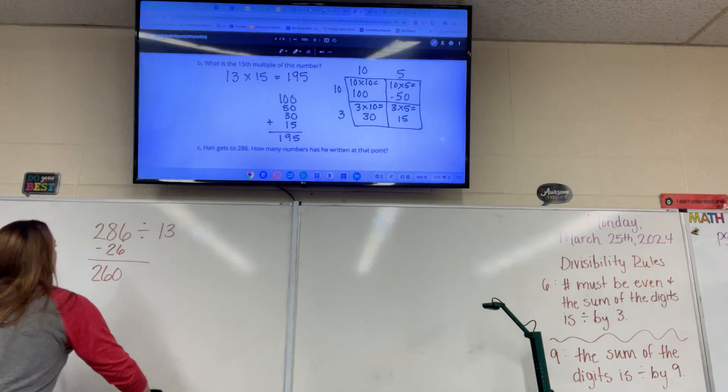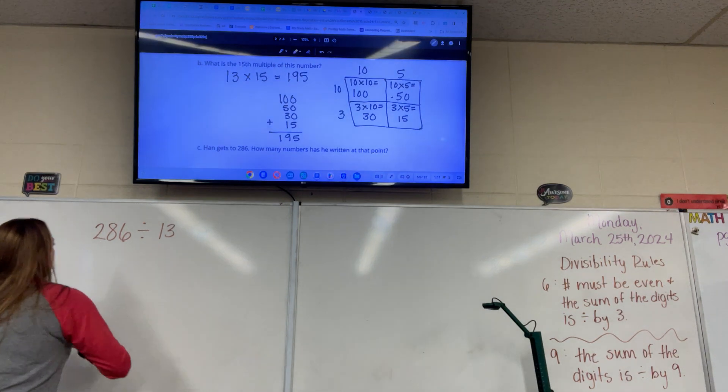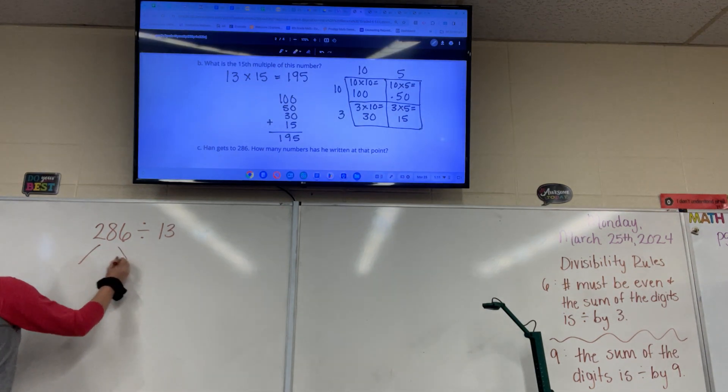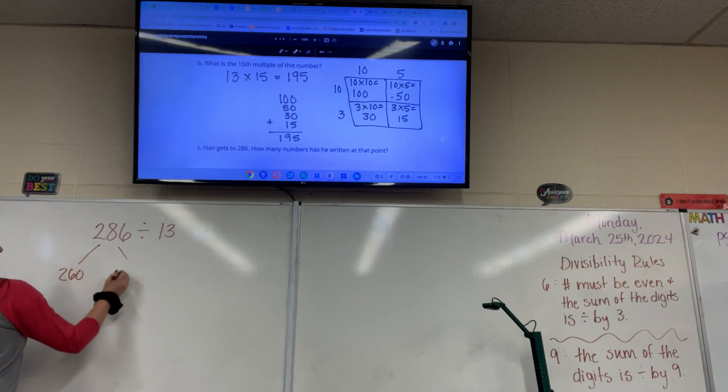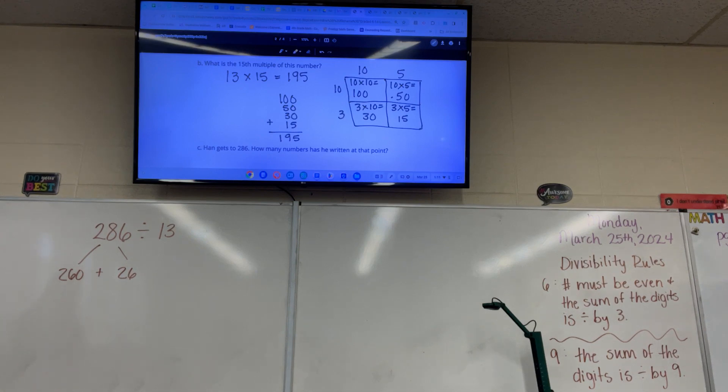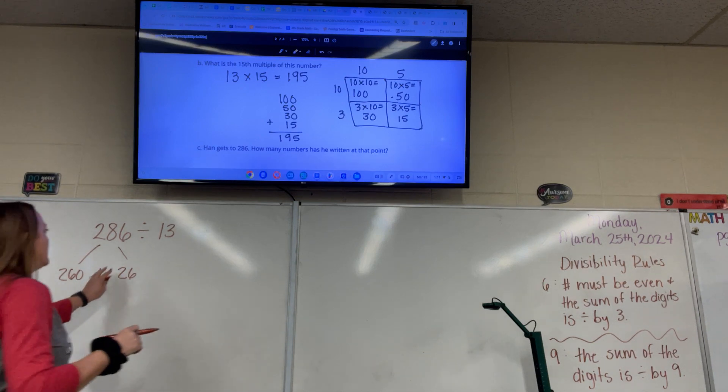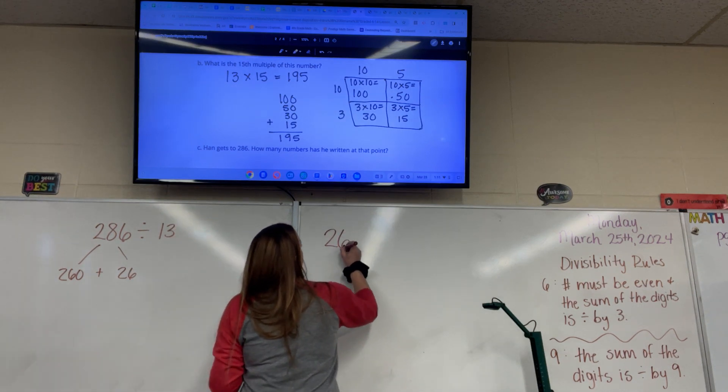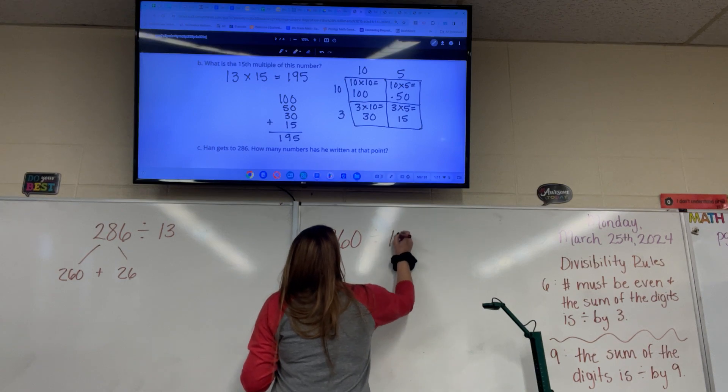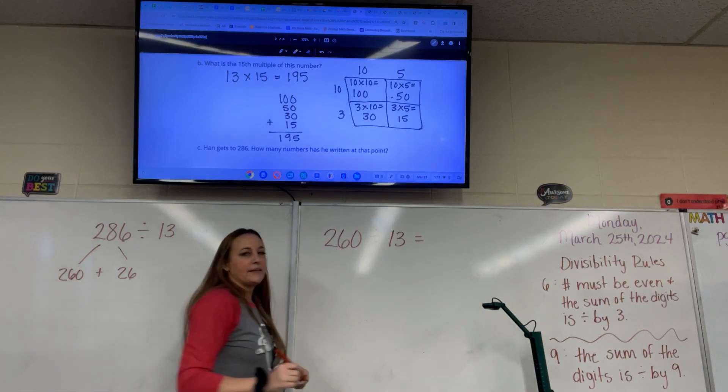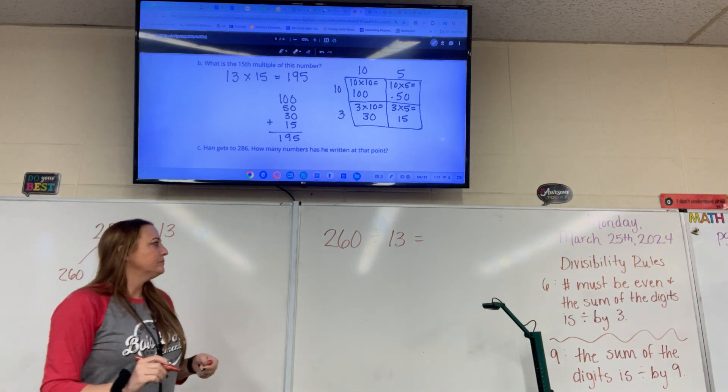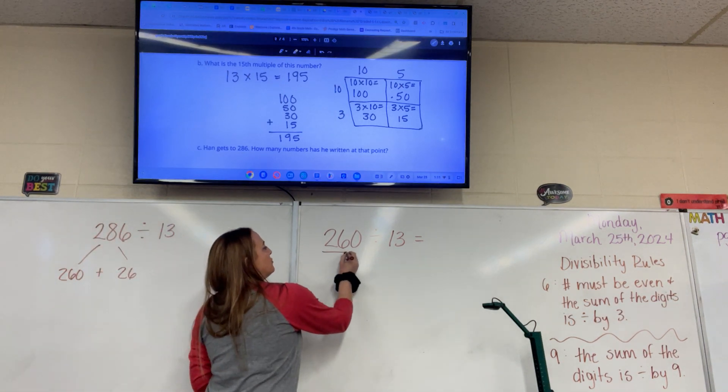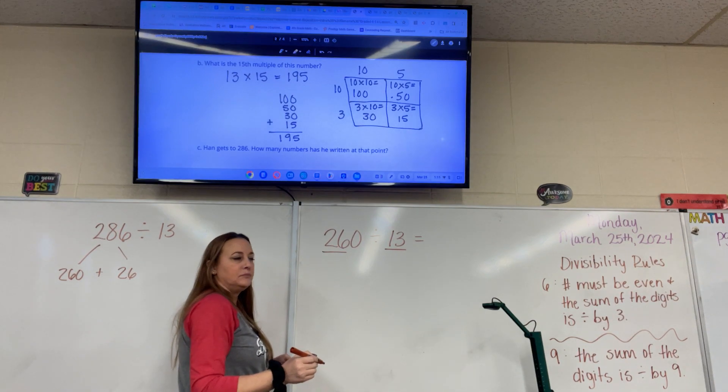So what I'm going to do is split 286 into 260 and 26. Okay? You add those together, they get 286. Right? And then I'm going to divide both of these by 13. So 260 divided by 13. Well what's your basic fact? Olivia? 26 divided by 13. And what is 26 divided by 13? 2. 2. And then you bring over the 0, right?